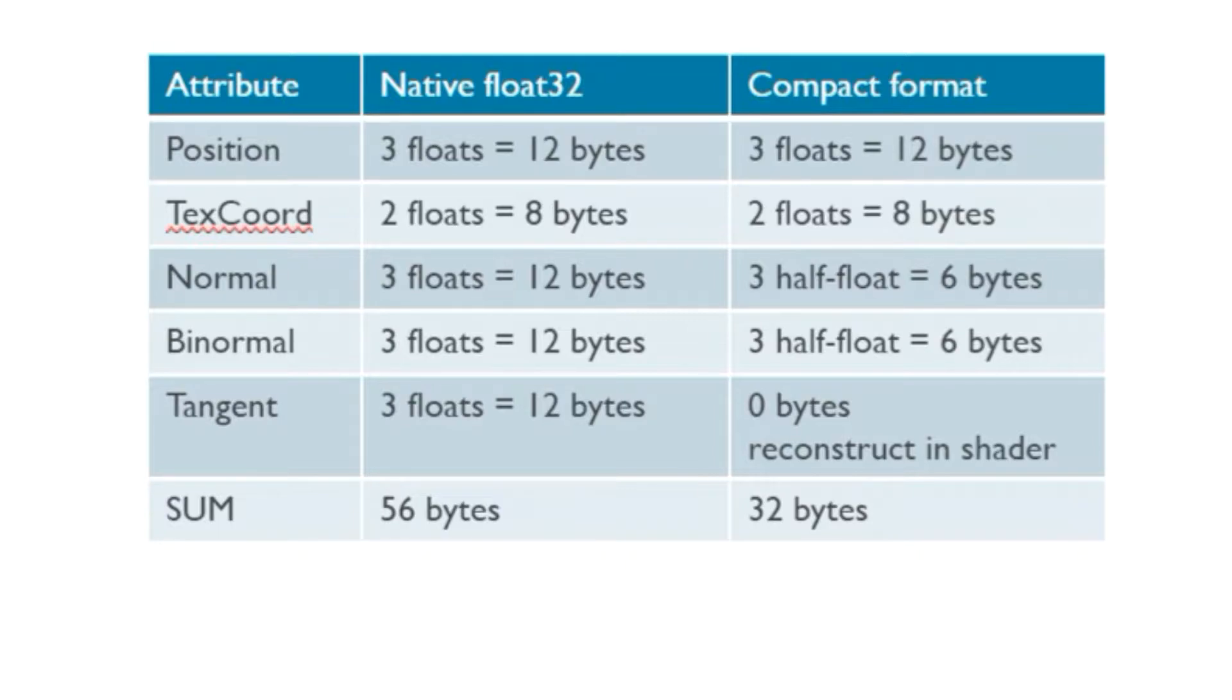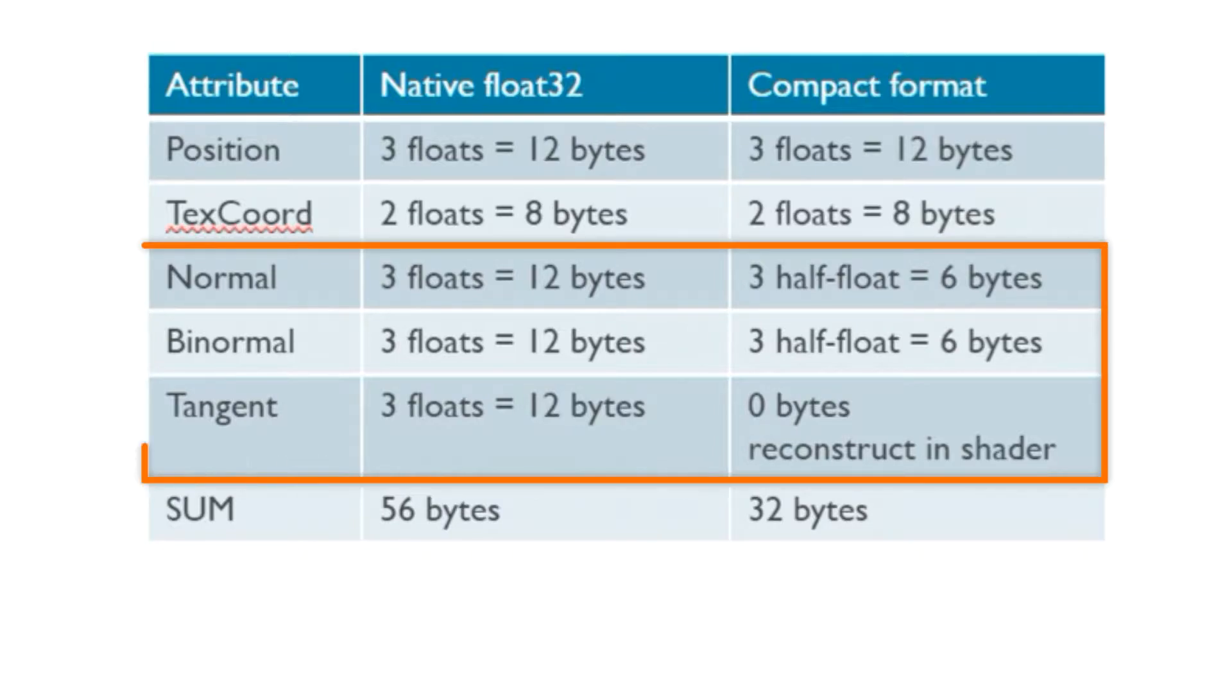This table shows a common efficiency mistake when passing in vectors for lighting calculations. Here, we can see that the user has passed in three unit length vectors: the normal, binormal, and tangent. These three define the axes in the coordinate frame and are always at 90 degrees from each other. It is not necessary to pass in all three. With knowledge of any pair of the three, it is possible to recompute the other. This allows us to omit one of the attributes completely and reconstruct it in the shader code, which is nearly always more energy efficient.